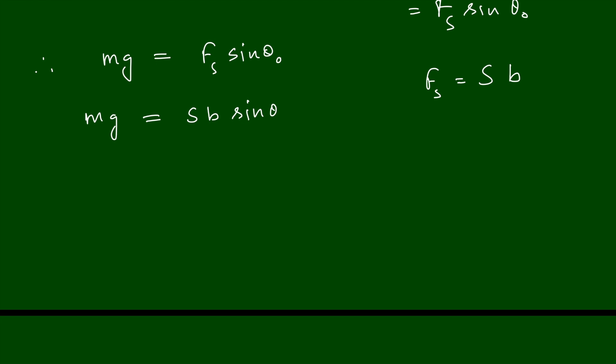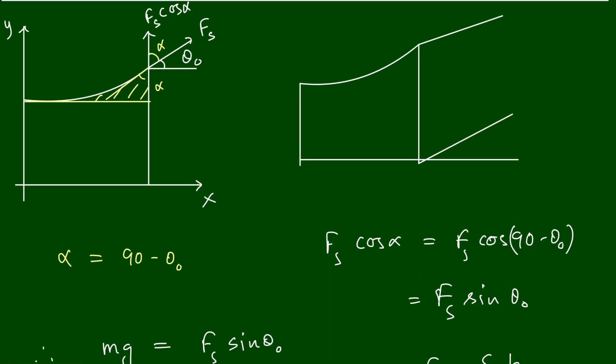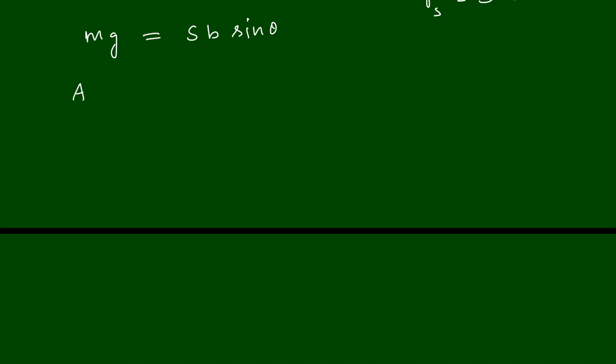Weight we are calculating where mass is equal to volume into density. The volume you can calculate - this is area, cross-sectional area, and length will be b. Volume is area into length b. Suppose I am considering density ρ into g is equal to S b sin θ. Now b gets cancelled out, so A ρ g is equal to S sin θ, and sin θ is already approximately equal to dy/dx.